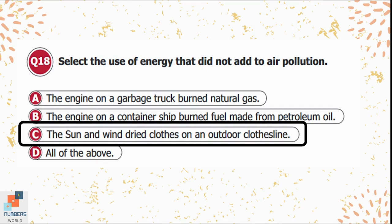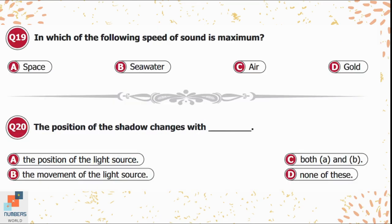Question 19: In which of the following is the speed of sound maximum — space, seawater, air, or gold? Air and space are not suitable because sound cannot travel through a vacuum. Gold is a solid and the particles of solids are packed tightly together, so sound travels with maximum speed through solids compared to water or air. Option D — gold — is the correct answer.